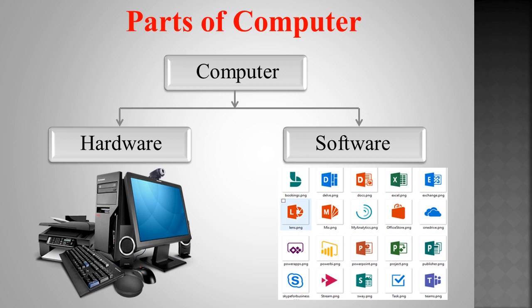First we will discuss about hardware. Hardware refers to the physical devices of a computer system which you can see and touch. Computer hardware includes the physical parts of a computer such as CPU (Central Processing Unit), monitor, mouse, keyboard, data storage, graphic card, sound card, speaker, motherboard, and so on.